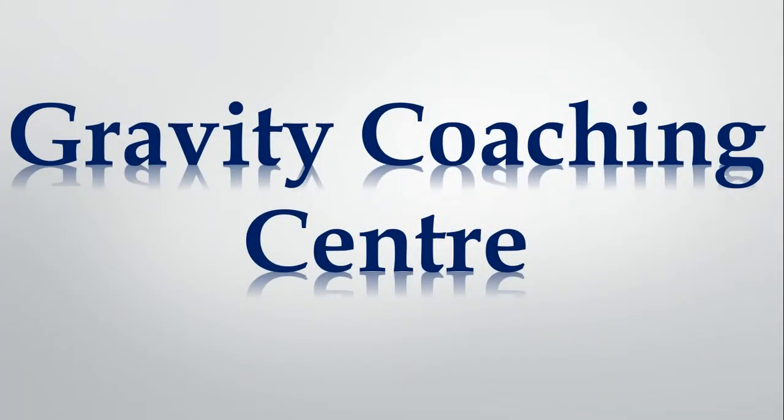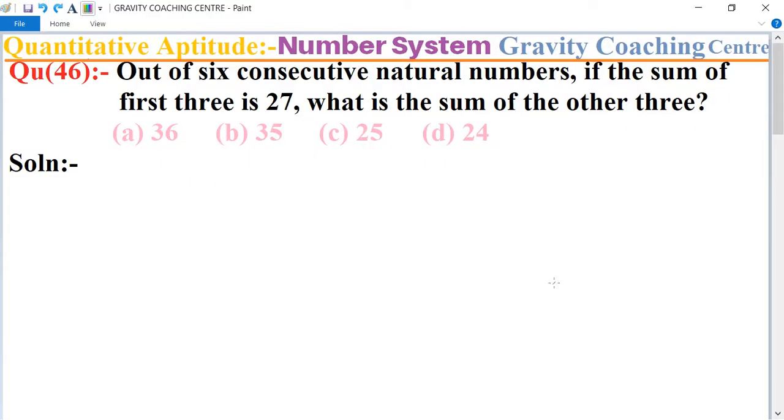Welcome to our channel Gravity Coaching Center. Chapter Number System, question number 46. Out of six consecutive natural numbers, if the sum of first three is 27, what is the sum of the other three?